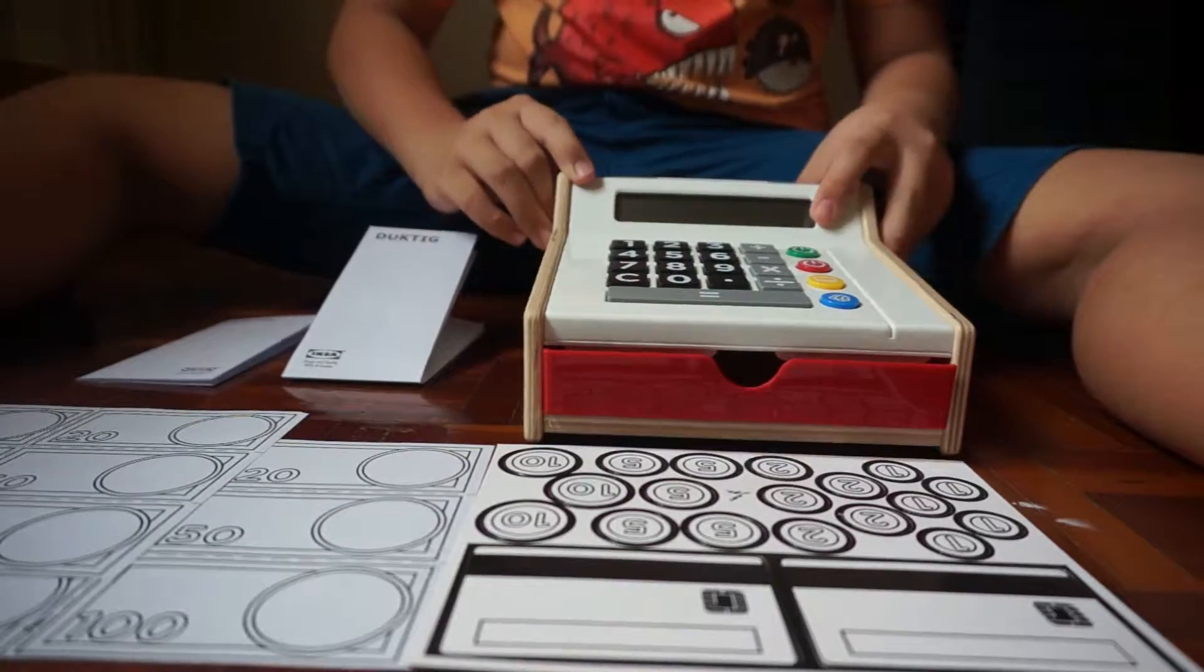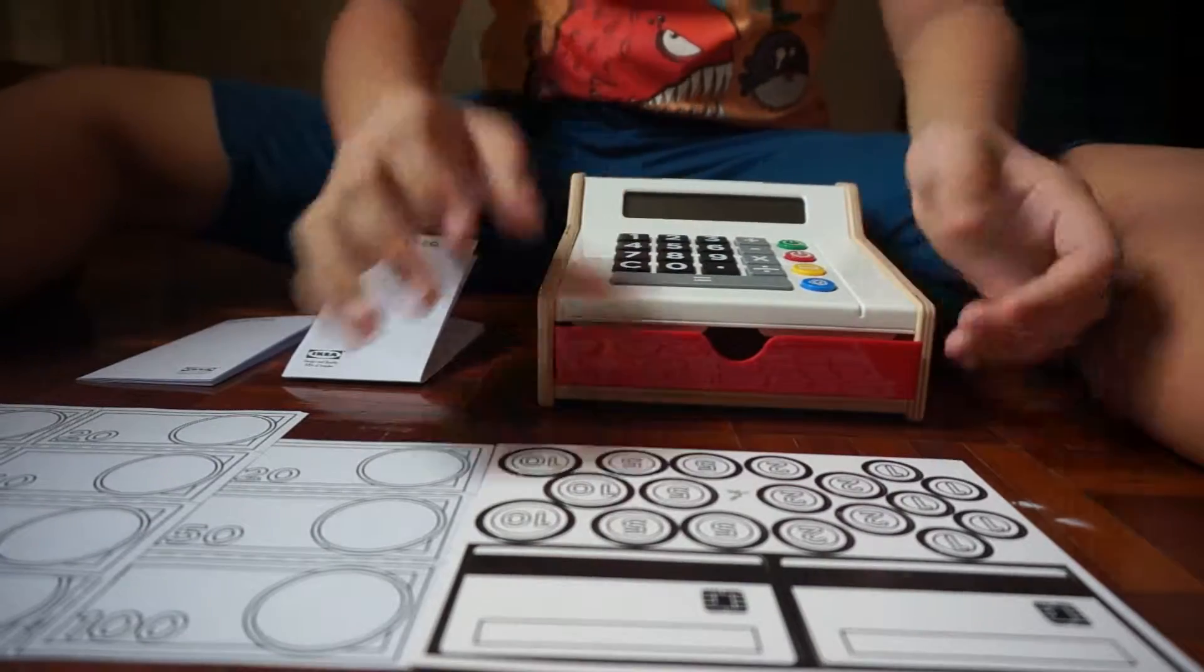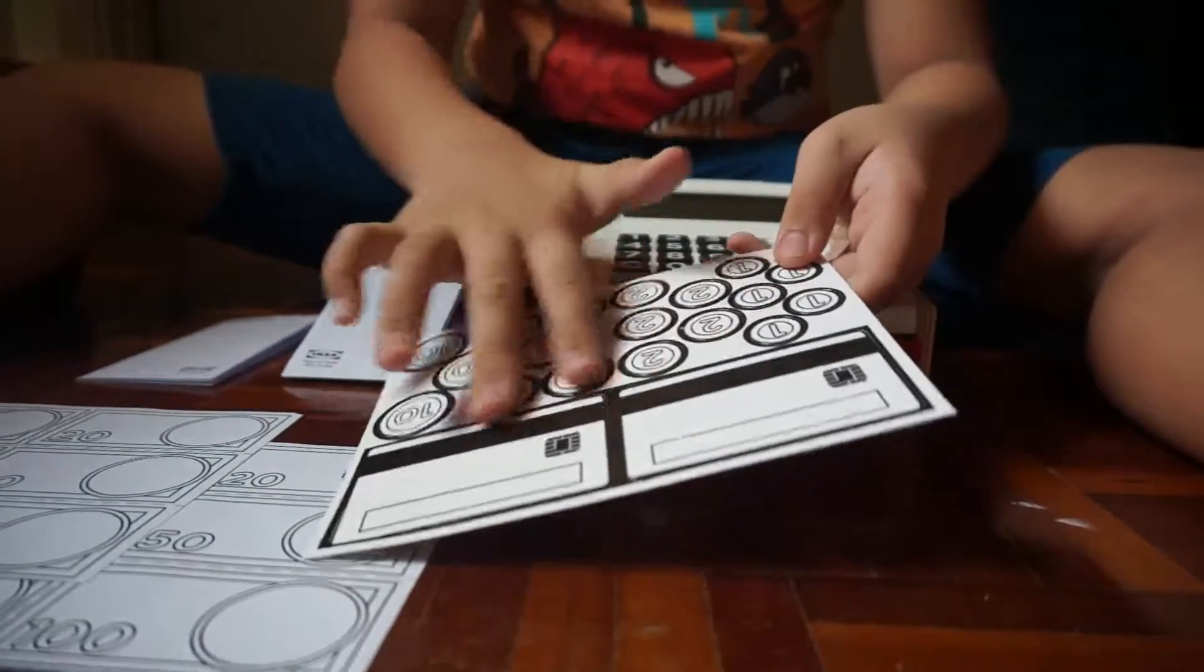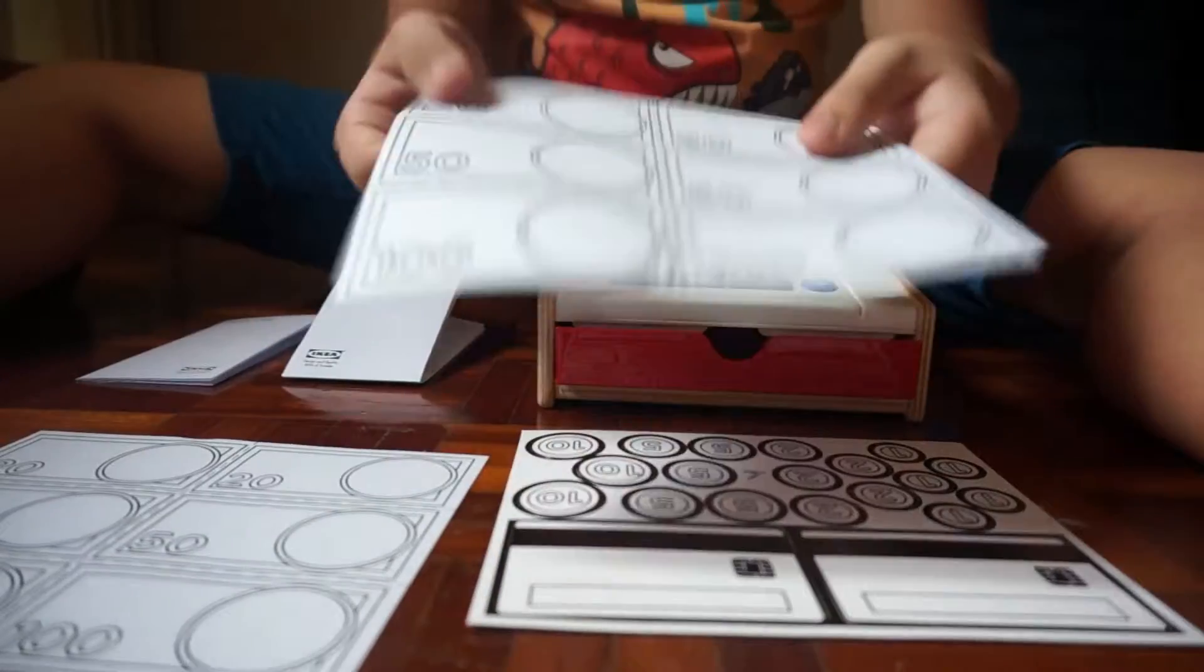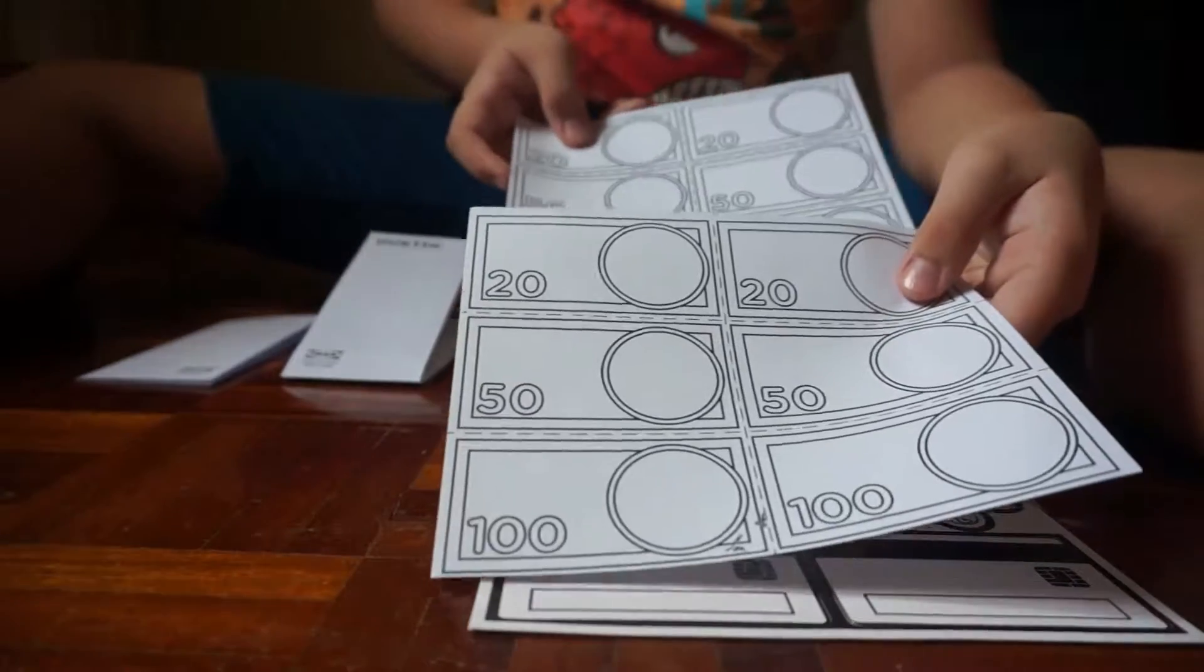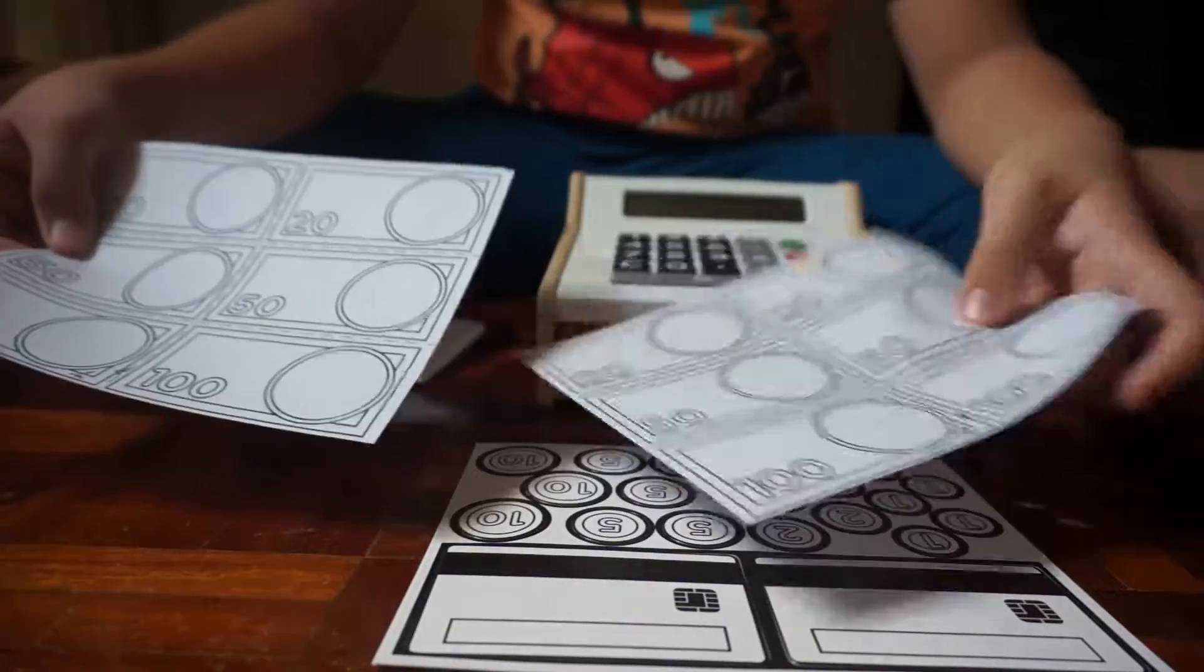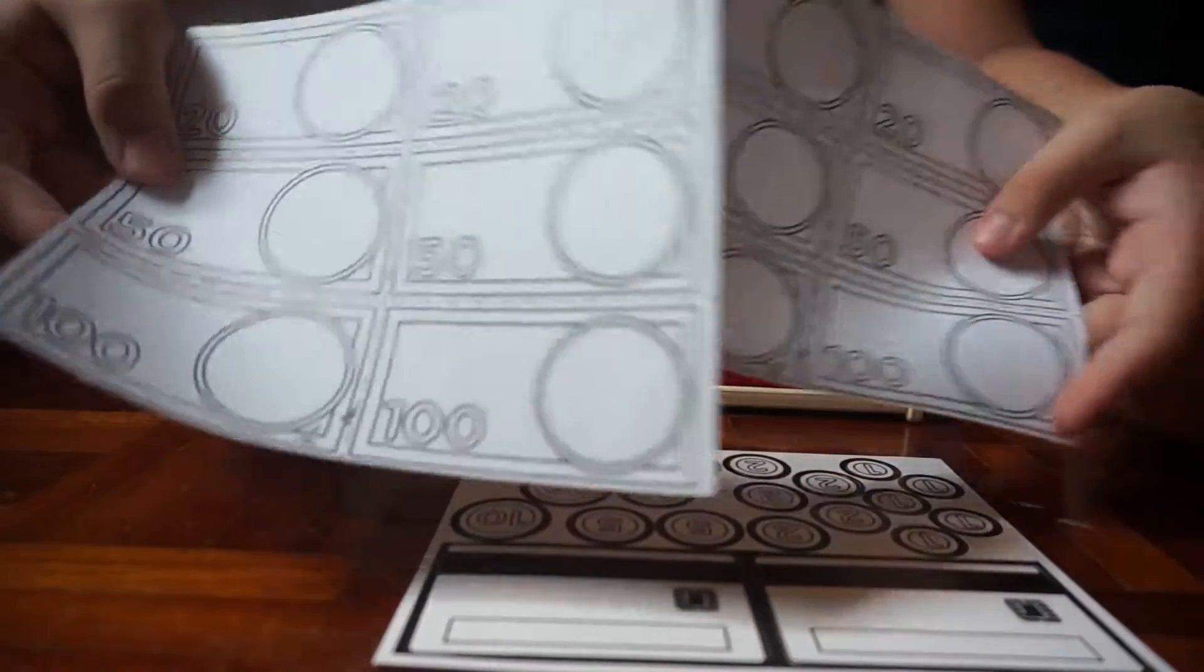In the box you have the main miniature cashier and cut paper with coins and credit cards. The money is $20, $50, and $100. It comes in two pieces, so you have 12 pieces of money.